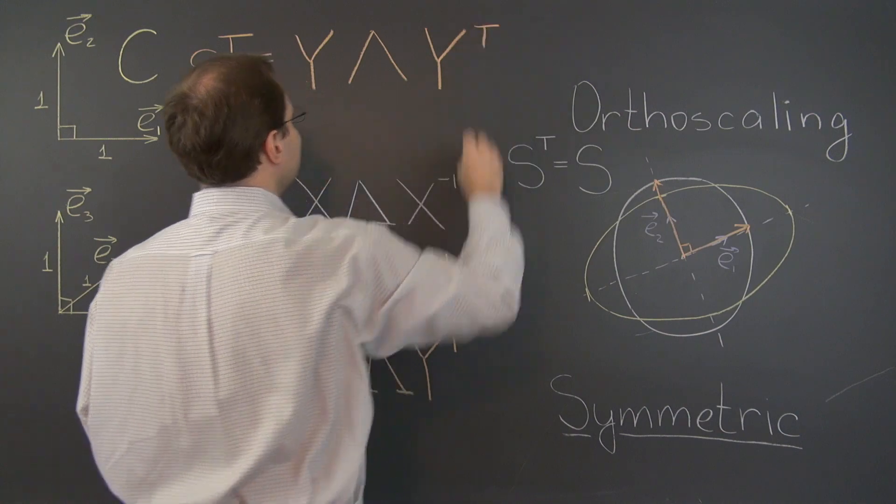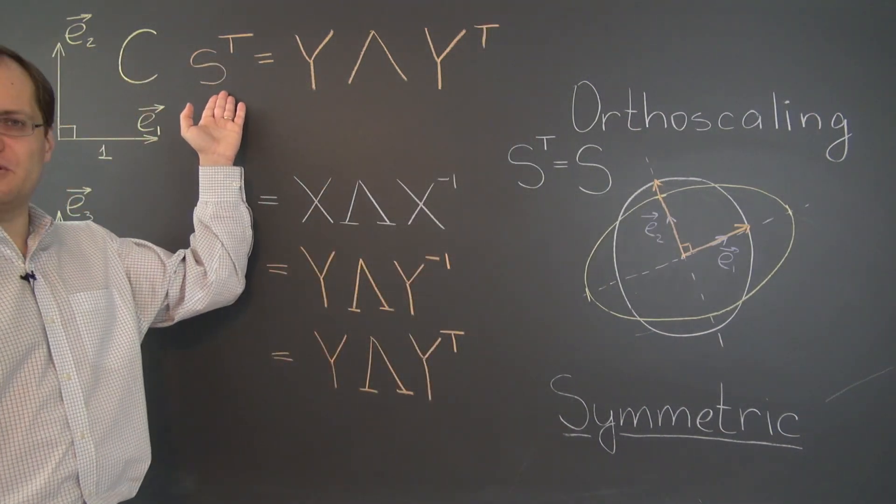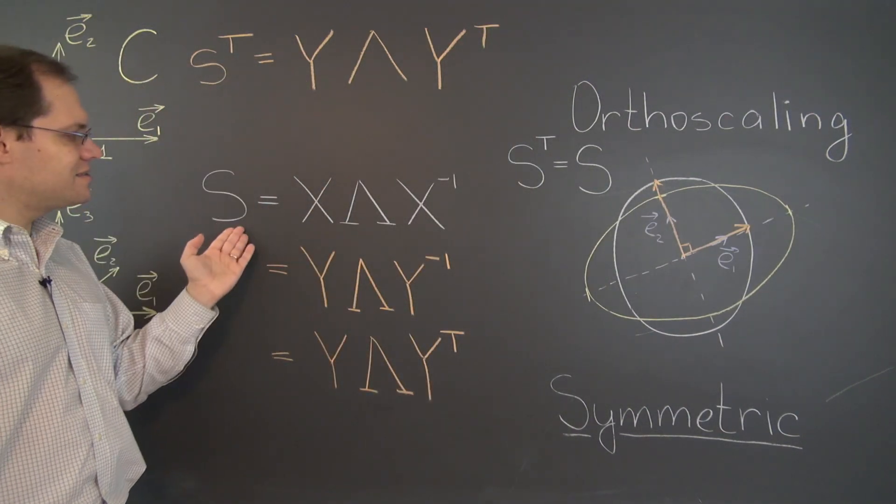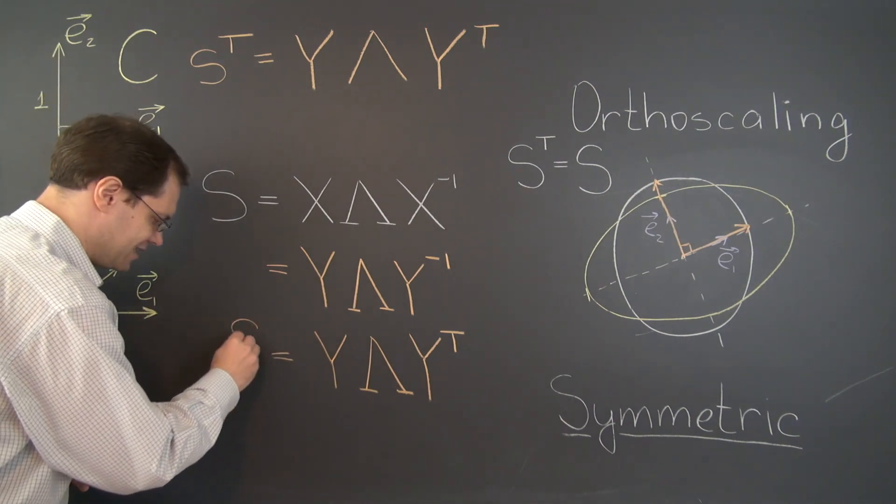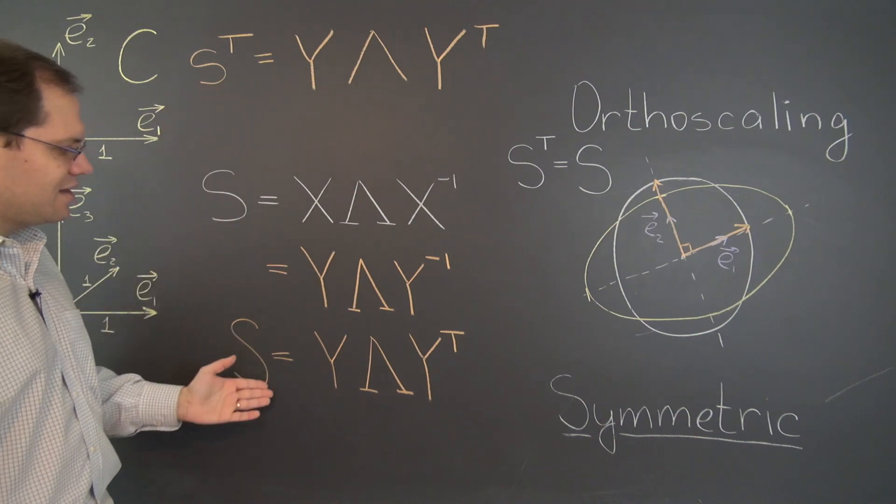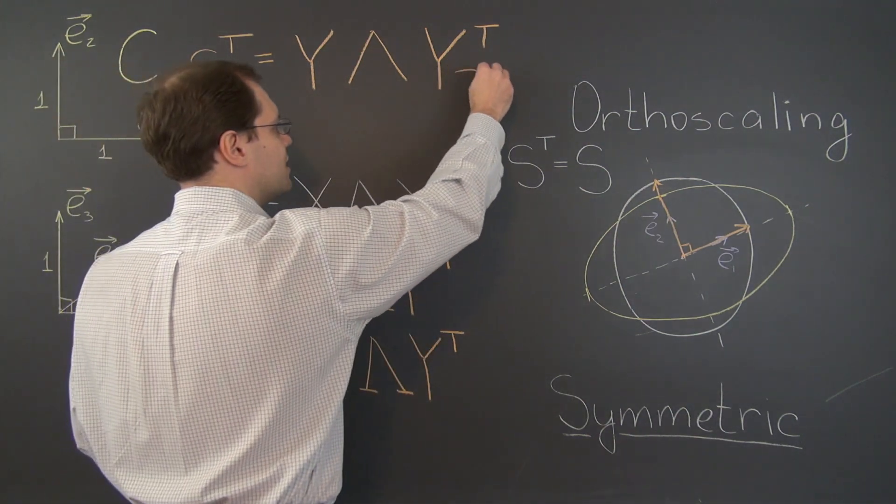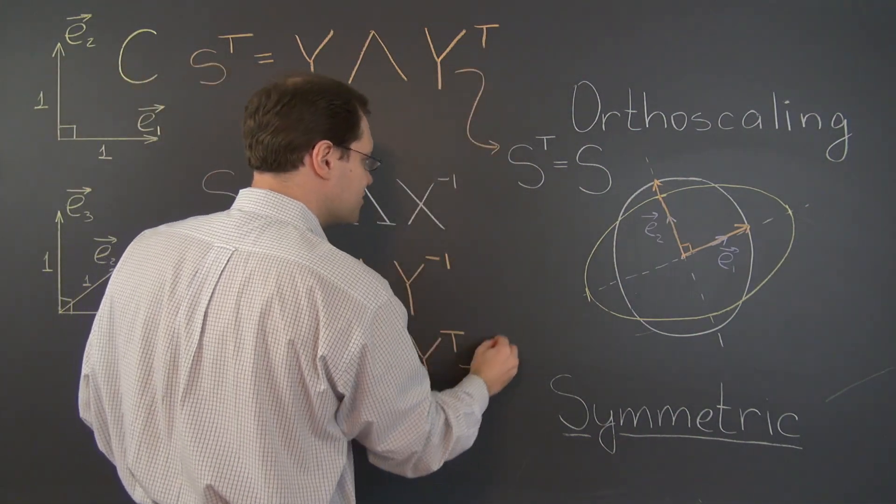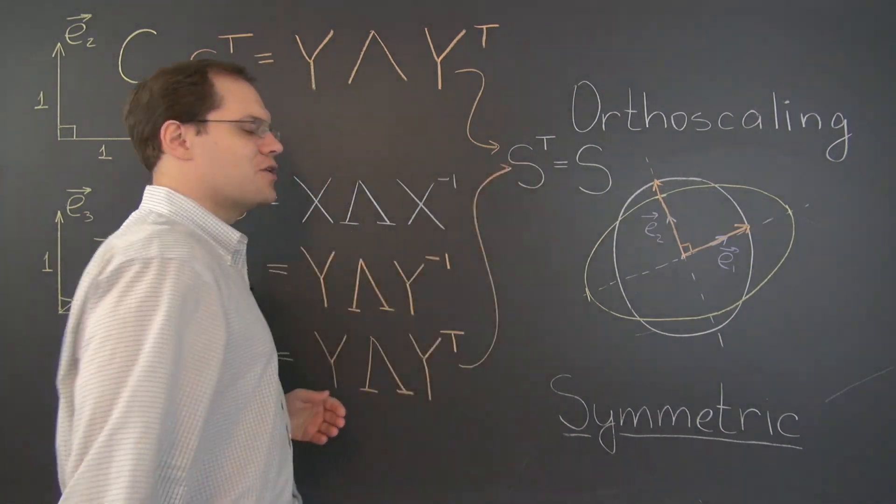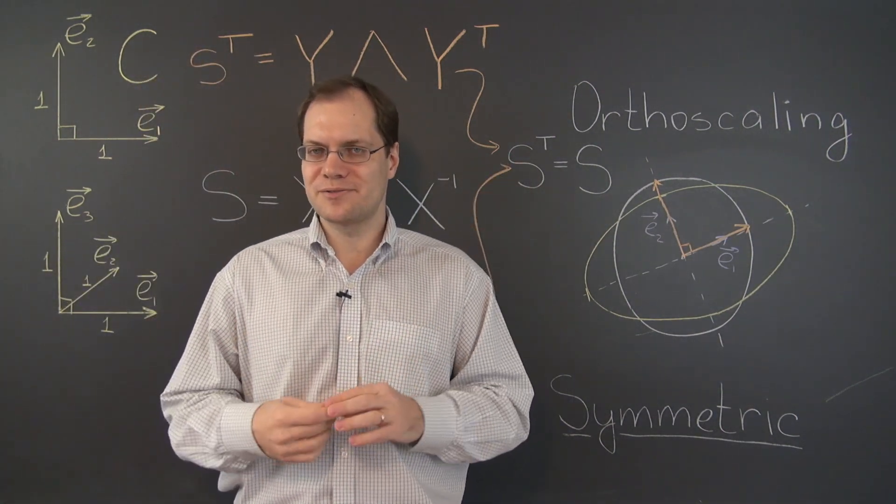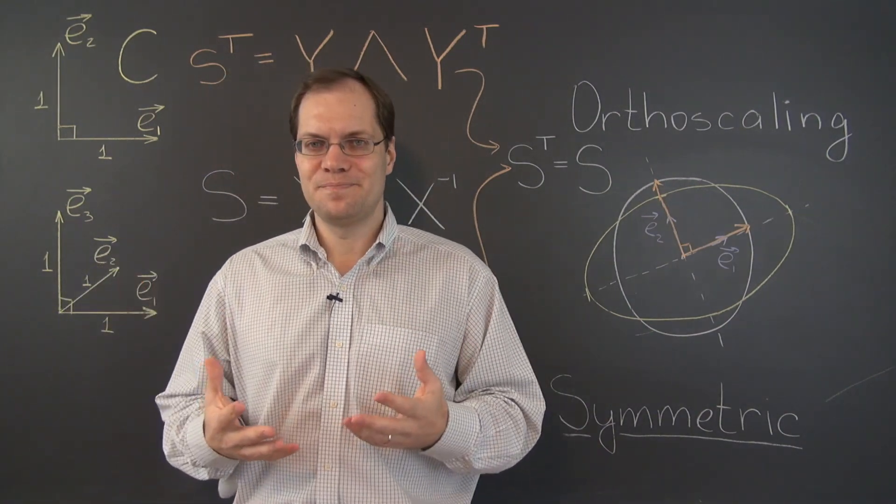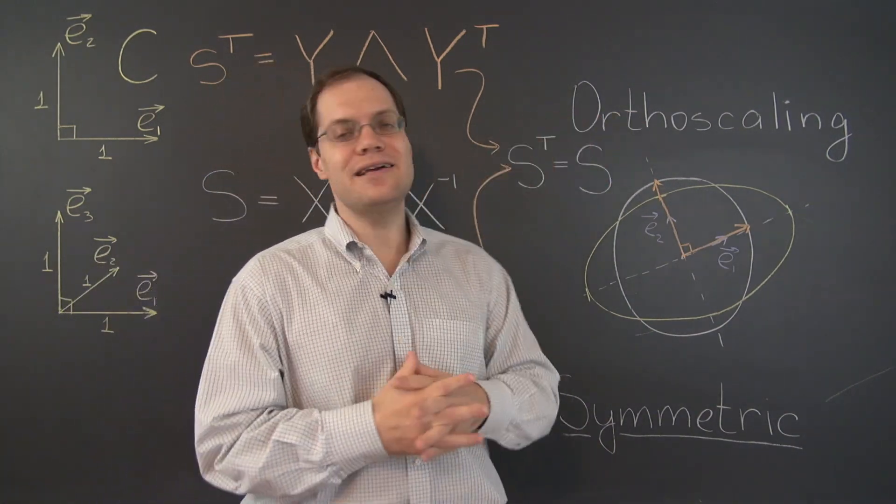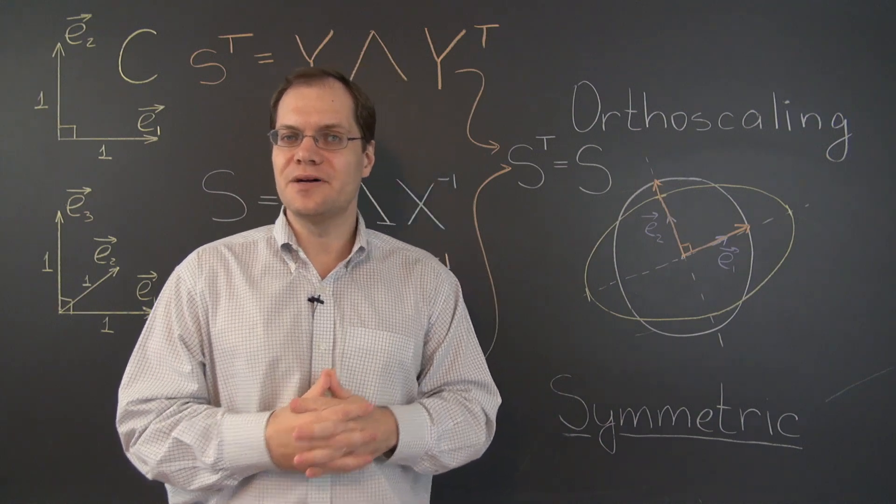And what do we see? We see that S transpose is exactly the same as S. Right? This once again is S. So S transpose is the same as S. So S transpose equals S as you can see. And therefore S is a symmetric matrix.